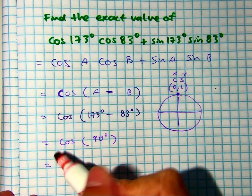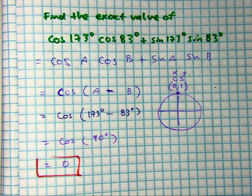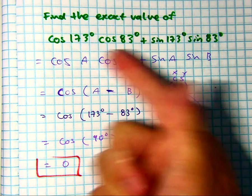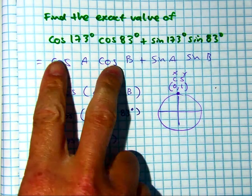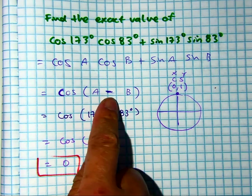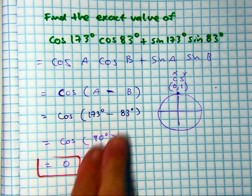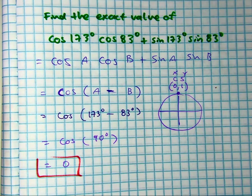In this problem, you have to work a little bit backwards. You're going to have to identify which identity you're using. In this case, if I put in the A's and B's, and I have cos, cos, sine, sine, that is the difference identity of cosine. I will subtract these two values, and then I can evaluate cosine at 90.